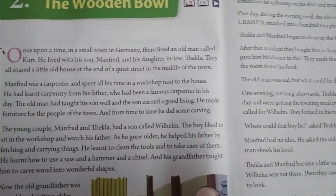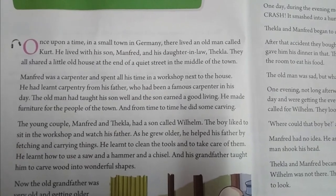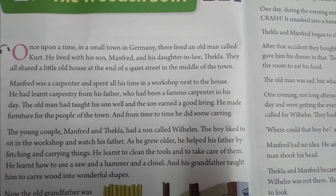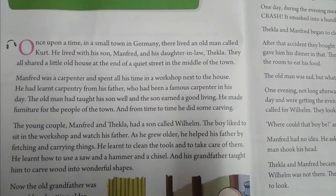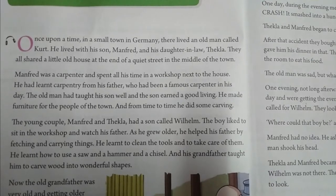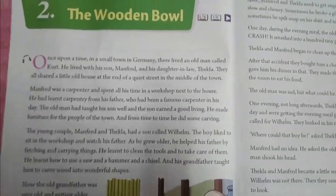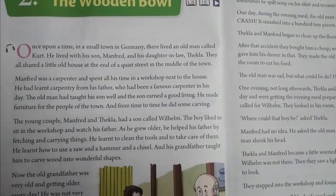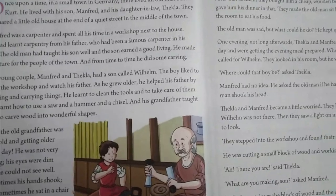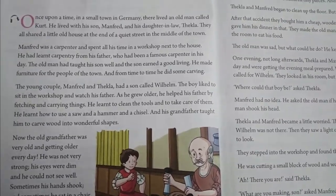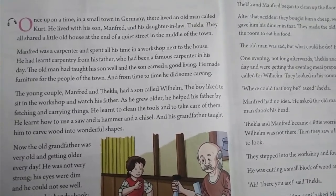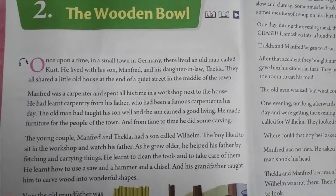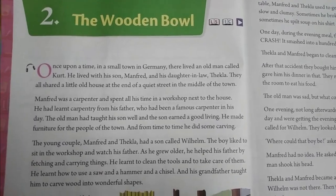Once upon a time in a small town in Germany, there lived an old man called Kurt. He lived with his son Manfred and his daughter-in-law Tekla. They all shared a little old house at the end of a quiet street in the middle of the town. The wife of one's son is called a daughter-in-law — that is the relation. Her name is Tekla.